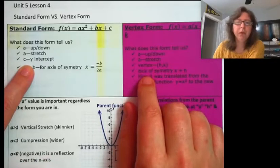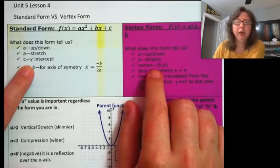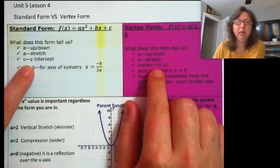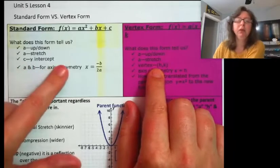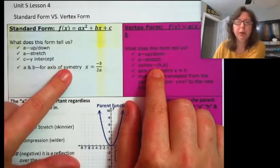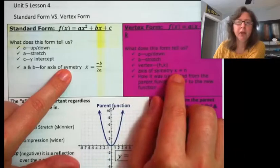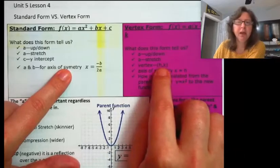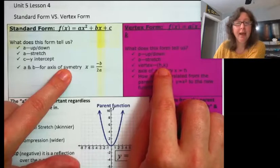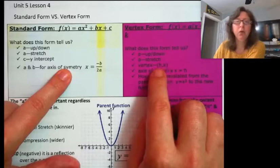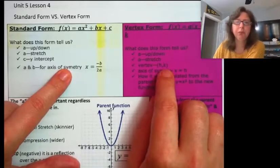Standard form also directly gives us the y-intercept, which is nice. But vertex form directly gives us the vertex, which is really nice too. The axis of symmetry — we can find it using this formula here; in vertex form, it's just the x value of the vertex. We call these h and k: the horizontal shift and the vertical shift.